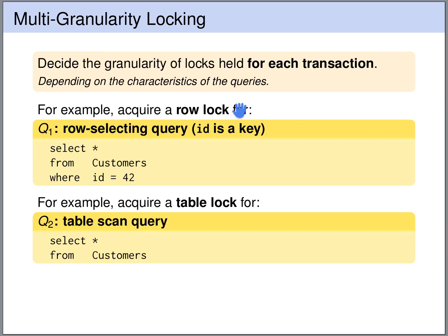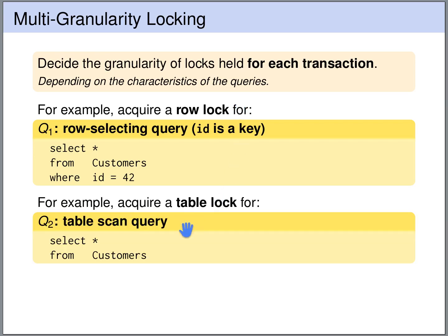Query 2 selects all the rows in the customers table — it scans the entire table. For this query, it would be a massive overhead to lock each single row, so it's much better to lock the entire table. So we have two different queries: one with a row lock and one with a table lock.